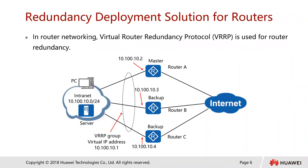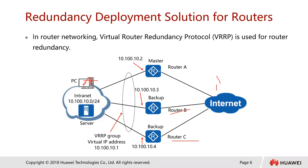Here we have a redundancy deployment solution for routers. In routing, if we have a network and want to ensure reliability or redundancy, we can deploy one or two or more routers to form a redundancy setup. In router networking, the Virtual Router Redundancy Protocol — VRRP — is used for router redundancy. We configure these routers forming what we call a VRRP group, where routers in the same network segment can send packets to each other.